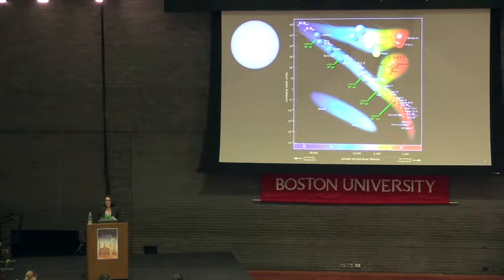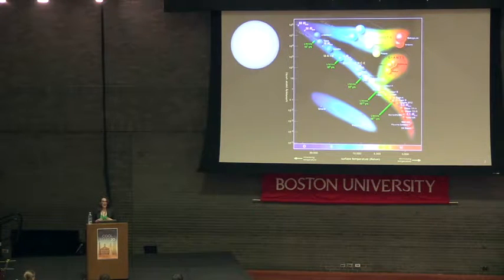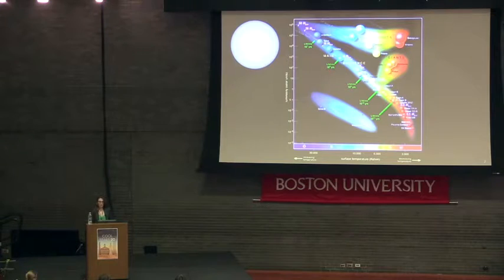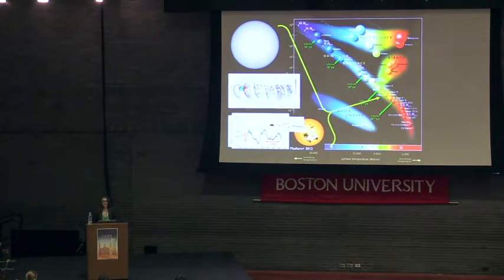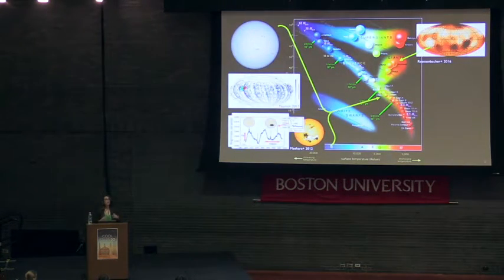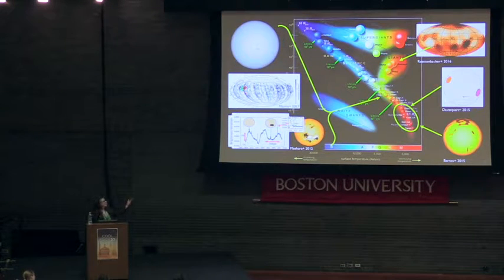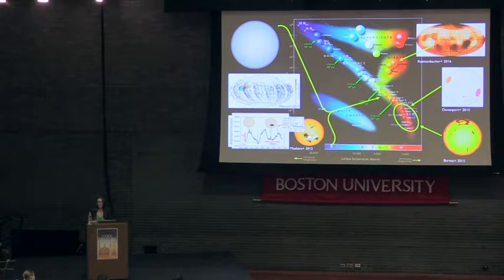Star spots are windows into a star's deep-seated magnetic processes, encoding information about the generation of this magnetism and its rise to the surface. The quintessential examples come from our own sun, but through various observational techniques, we now know that there's a wide variety of star spot behavior — not just among solar-like stars with tachoclines, but also giant stars with very deep convection zones and the smallest stars, some of which are fully convective.